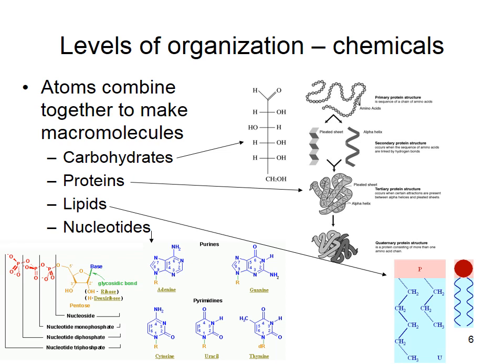Nucleotides include ATP, the energy currency of our cells, but we also have purines and pyrimidines — adenine, guanine, cytosine, and uracil. What do those make up? DNA and RNA, our genetic code.